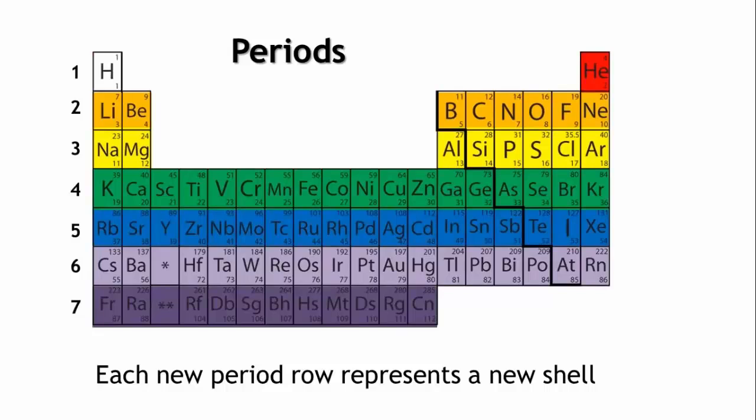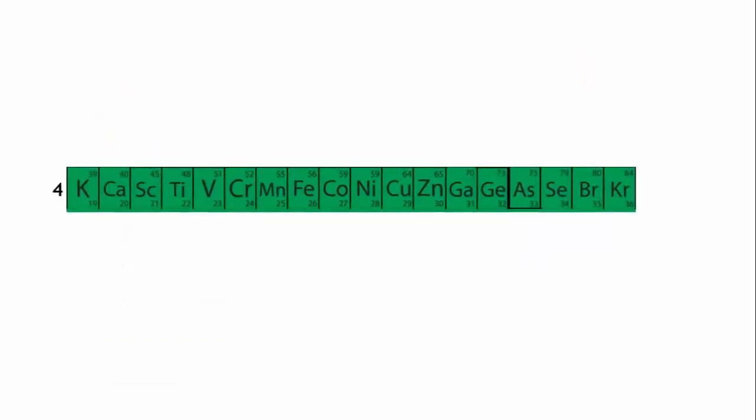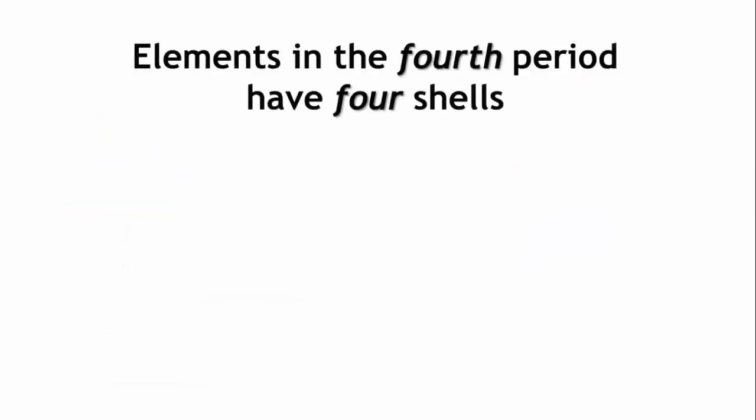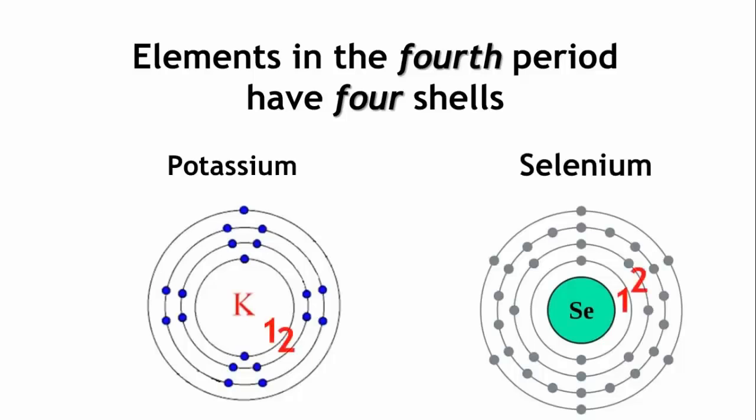Hydrogen is in the first period. It has one shell. Potassium is in the fourth period and has four energy shells, as do all the other elements in this period.